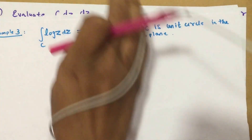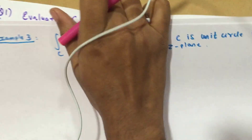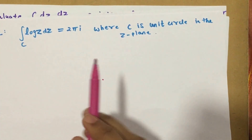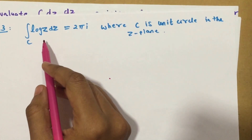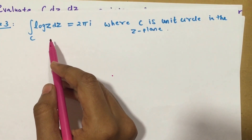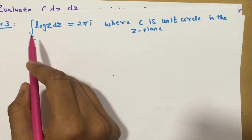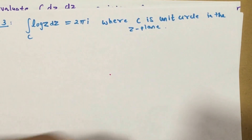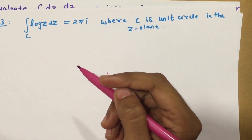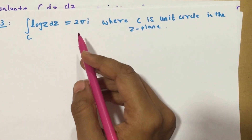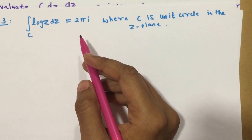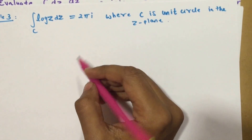Let's cover a new variety — this will be the final type you will encounter. The question is: evaluate ∫Log(z)·dz over a circle C, where C is a unit circle in the z-plane. Here you have to prove that the integral is equal to 2πi.